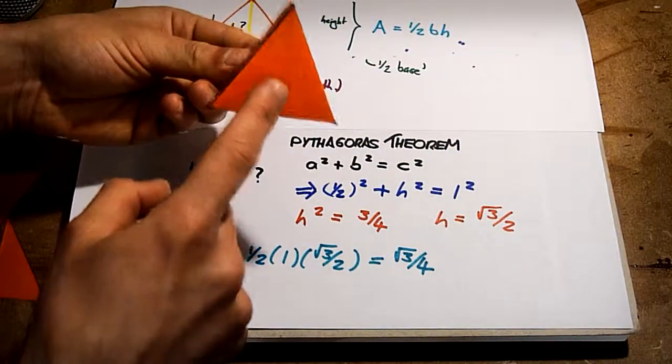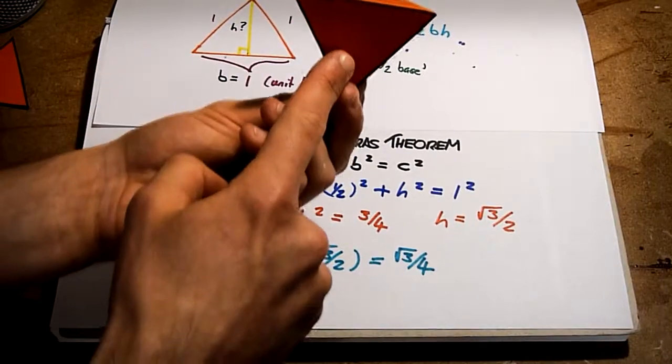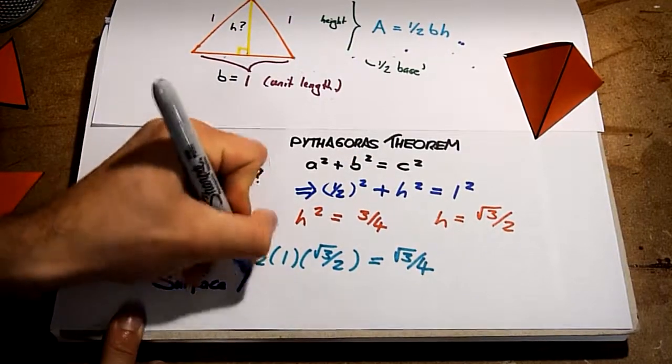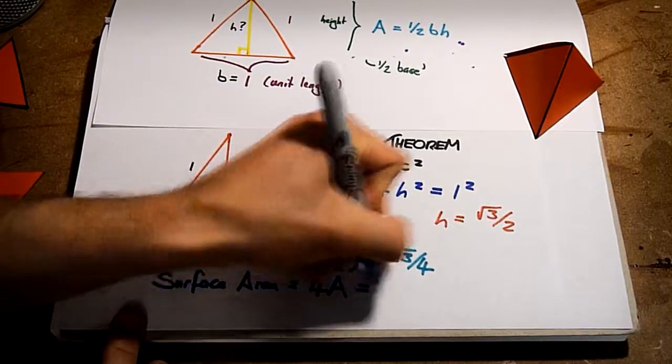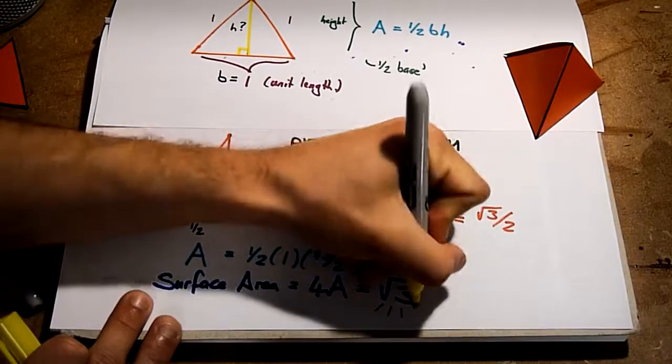The tetrahedron has four of these sides, and so the surface area is simply four times the area of an equilateral triangle. Thus, the surface area of our tetrahedron with unit side length is root 3.